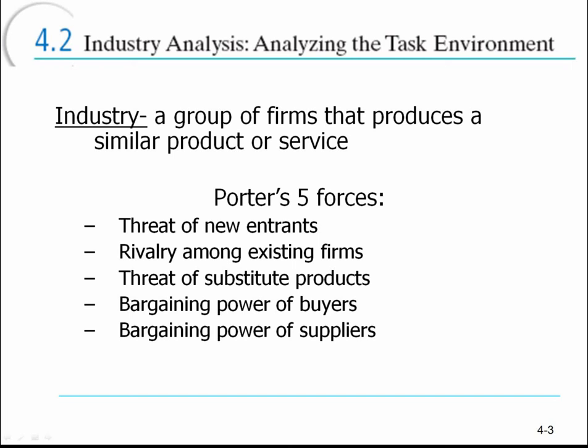In this model we examine five forces that can impact an organization, and thereby have an impact on what strategies the organization should use in order to ensure its success. Those forces are: threat of new entrants, rivalry among existing firms, threat of substitute products, bargaining power of buyers, and bargaining power of suppliers.